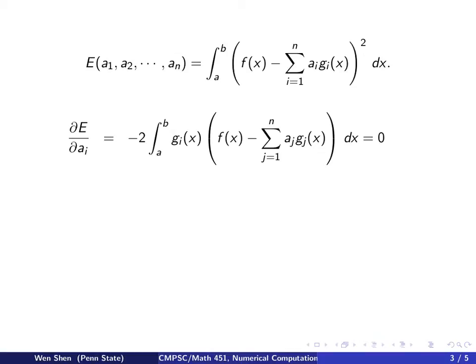Now we take partial derivative with respect to a_i. One can differentiate the integrand and then integrate afterwards. And if we do that, we see we have a constant 2 coming out, and I will have 2 multiply whatever is in here, so I copy down whatever is in here.